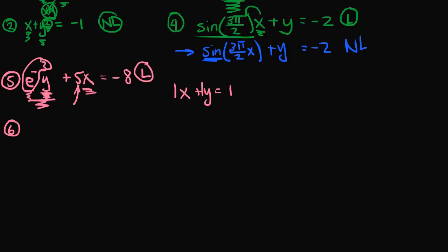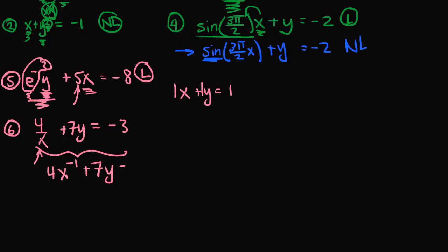Example 6: 4 over x plus 7y is equal to negative 3. Right away, x is in the denominator. We can rewrite this as 4 times x to the negative 1 plus 7y equals negative 3, since 1 over x is the same as x to the negative 1st power. Because x is raised to the negative 1st power, this equation is nonlinear.